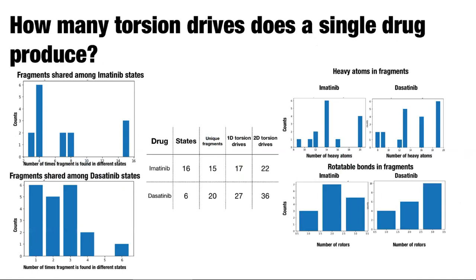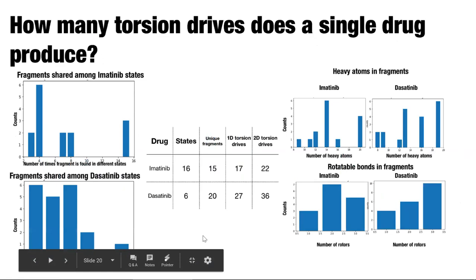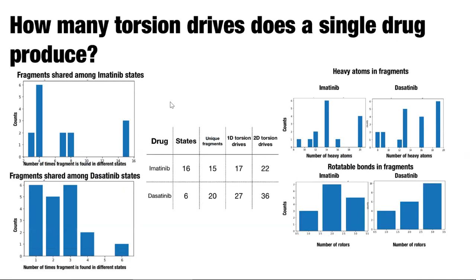Data will be kept in the database and reused. Here's an overview of how many torsion drives you need for drug-like molecules, using imatinib and dasatinib as examples. This shows fragments shared among imatinib and dasatinib states. With imatinib, you get 16 states but only 15 unique fragments. For 2D torsion drives, I find rotatable bonds and do all combinatorial pairs to capture all correlations between torsions — there may be smarter ways to reduce that, but currently using a bit of brute force.